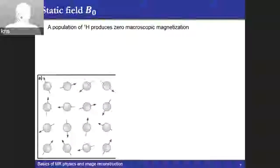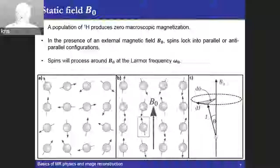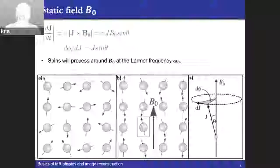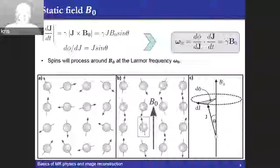If we just have a set of spins creating their own magnetic moments, their likelihood of being oriented in any direction in space is the same. So if we add them all up, they will cancel out and we will not measure any net magnetization. However, in the presence of a magnetic field, they will lock into two possible energy states — one parallel and the other anti-parallel — and begin precessing at a frequency given by the Larmor frequency. This Larmor frequency is proportional to the B0 field, with the gyromagnetic ratio as the constant of proportionality.